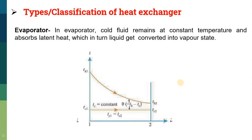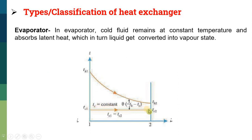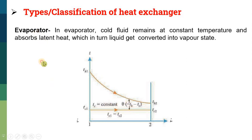In an evaporator, which is the opposite of a condenser, the temperature of the cold fluid remains constant instead of the hot fluid. In an evaporator, the cold fluid remains at constant temperature and absorbs latent heat, which causes the liquid to convert into vapor state. Whatever heat is lost by the hot fluid, shown by a decreasing value in the graph, is absorbed by the cold fluid, but the cold fluid temperature remains constant — meaning the liquid coolant converts into vapor. This is known as an evaporator.